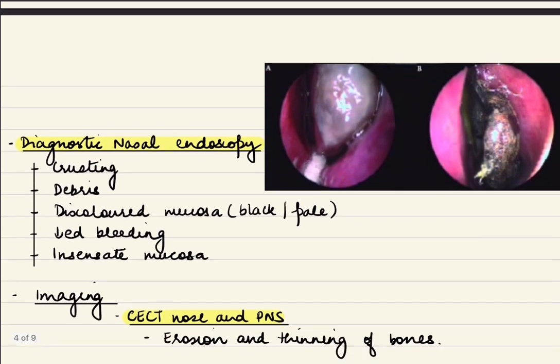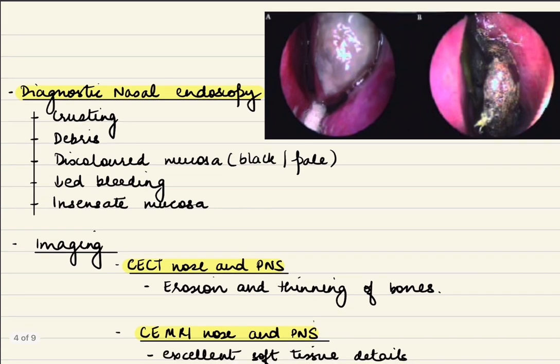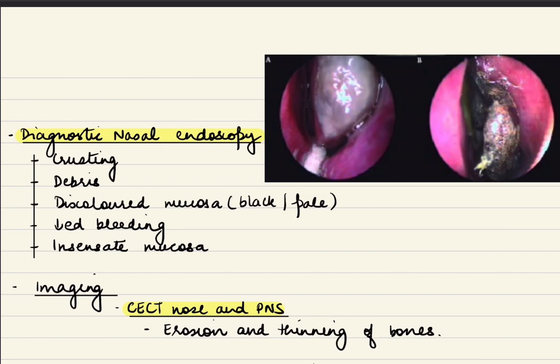Important tests include early diagnostic nasal endoscopy. In diagnostic nasal endoscopy, there may be crusting, debris, discolored mucosa which may be black or pale, and the diseased part may have decreased bleeding and insensate mucosa. As you can see in this endoscopy picture, there is discoloration of the turbinate, and with due course of time this will turn completely black.